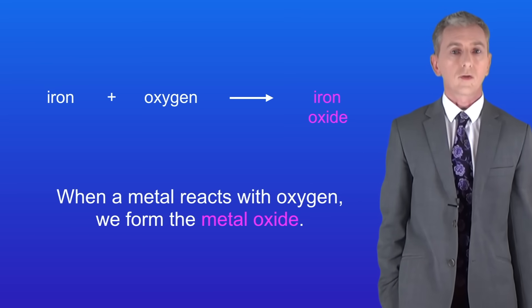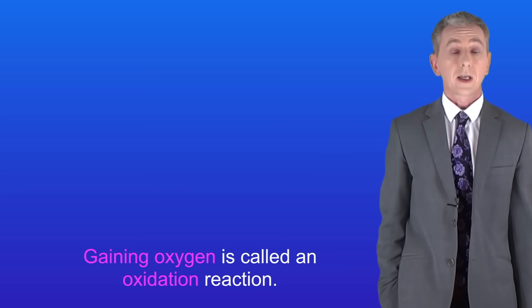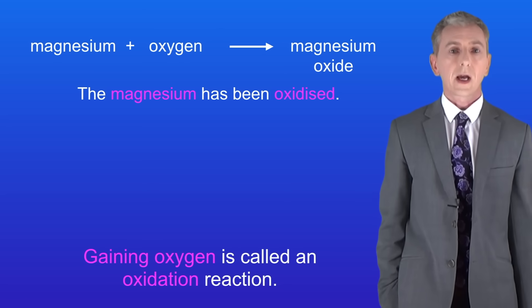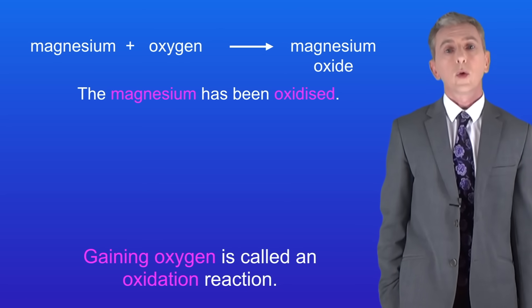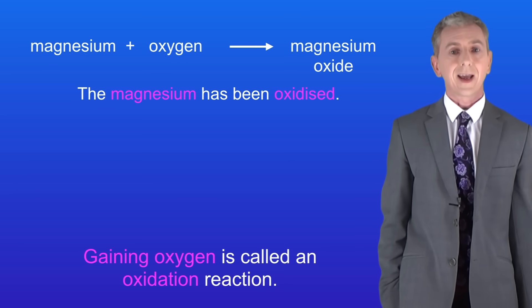In both of these reactions the metal has gained oxygen. Gaining oxygen is called an oxidation reaction and you need to learn that. So in the case of the reaction between magnesium and oxygen we can say that the magnesium has been oxidized, in other words it's gained oxygen.